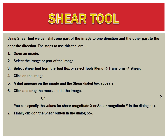Fourth step: click on the image. Fifth, a grid appears on the image and the Shear dialog box appears. Click and drag the mouse to tilt the image. You can specify the value for Shear Magnitude X or Shear Magnitude Y in the dialog box. Finally, click on the Shear button in the dialog box.